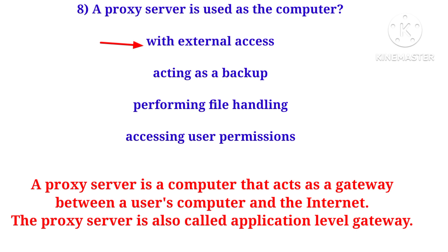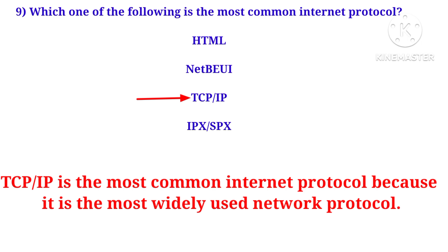A proxy server is also called an application level gateway. Next question: which one of the following is the most common internet protocol? The correct answer is TCP/IP. TCP stands for Transmission Control Protocol and IP stands for Internet Protocol. It is the most widely used network protocol.